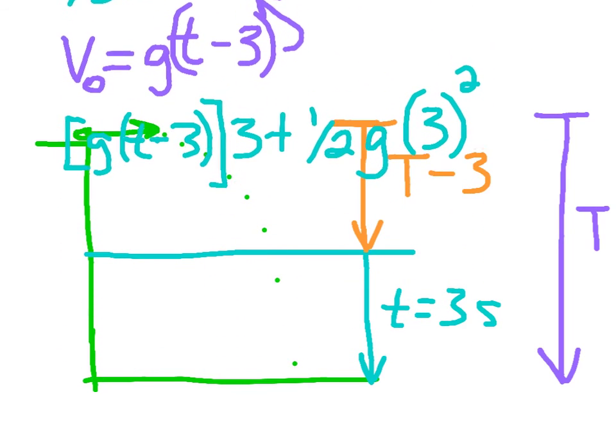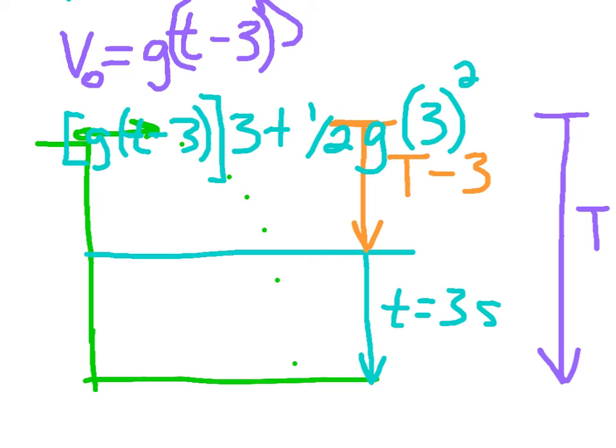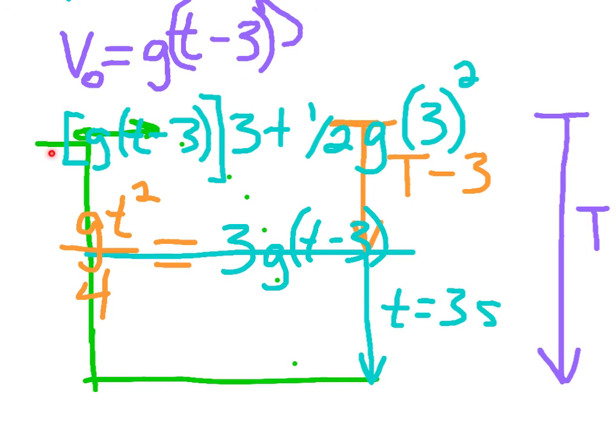That will equal G times T squared divided by four. And that is equal to my aqua equation, and I'm going to simplify the aqua equation as well. So I'm going to say three times G times T minus three, which is this portion right here simplified, plus, and then three squared is nine, so nine G divided by two.